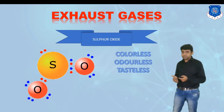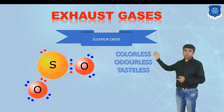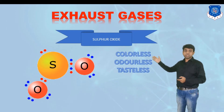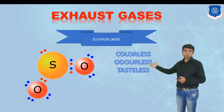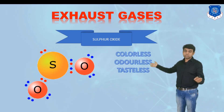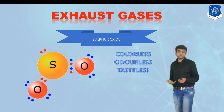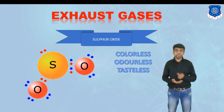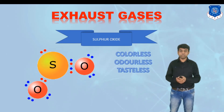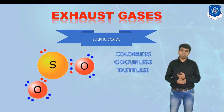The primary exhaust gases include, first, sulfur oxide — a combination of sulfur and oxides. This gas is completely colorless, odorless, and tasteless, making it very difficult to detect. It is neither visible nor can you smell or taste it, so it is very hard to identify the presence of sulfur oxide in exhaust gas.